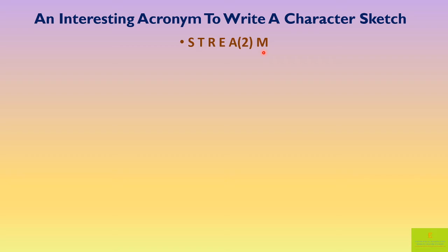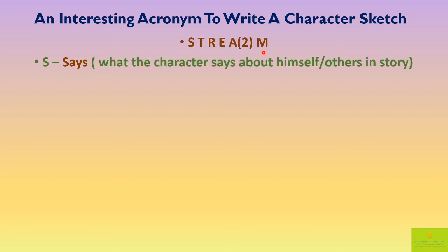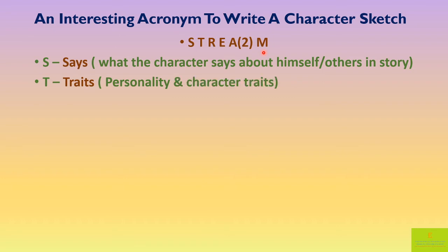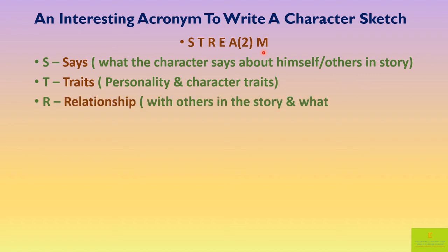First, from S, we have 'says' — it is what the character says about himself or others in the story. Next is T, which means 'traits' — the personality traits or other character traits of the character. Next, R stands for 'relationship' — what is the relationship of the character with others in the story, what kind of relationship it is, whether it is friendly, husband and wife, mother-daughter, and also whether it is a happy relationship or a very upsetting one.